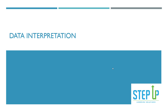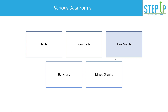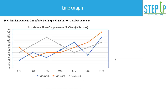Hello and welcome to this third video on data interpretation. In my previous two videos I looked at data forms from tables and pie charts. In this video we'll discuss line graphs — how to read them, what information is presented, and we'll do some smart calculations to solve five questions on line graphs. In this graph it represents exports from three companies X, Y, and Z over the years. The blue line is company X, the orange one is company Y, and the gray one is company Z.